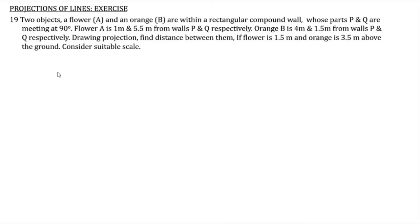So this is the question. Two objects — a flower and an orange — are given. They are within a rectangular compound wall, towards the corner where walls P and Q meet at 90 degrees. Flower A is 1 meter from wall P and 5.5 meters from wall Q. Orange B is 4 meters from wall P and 1.5 meters from wall Q. The flower is 1.5 meters above ground and the orange is 3.5 meters above ground. We have to draw the projections and find the true distance between them.